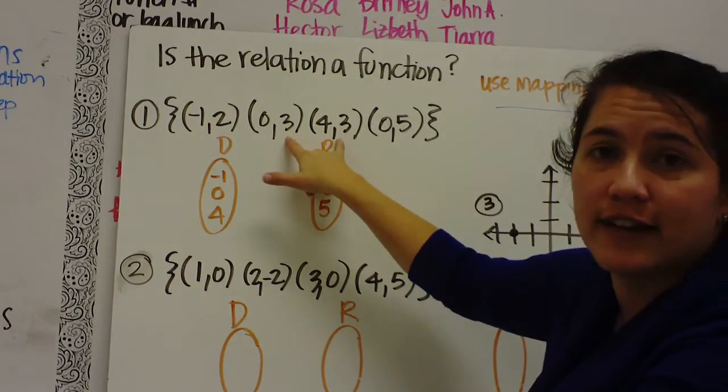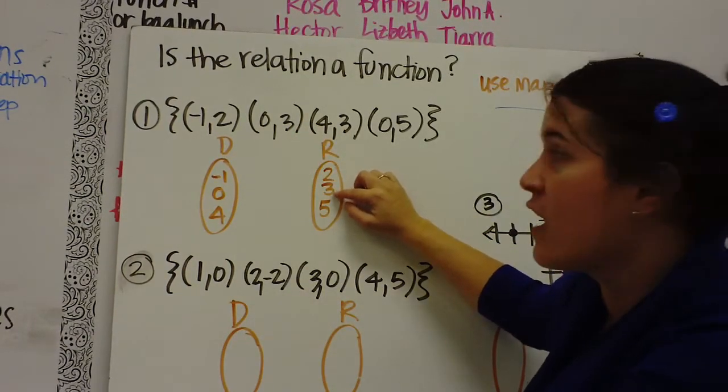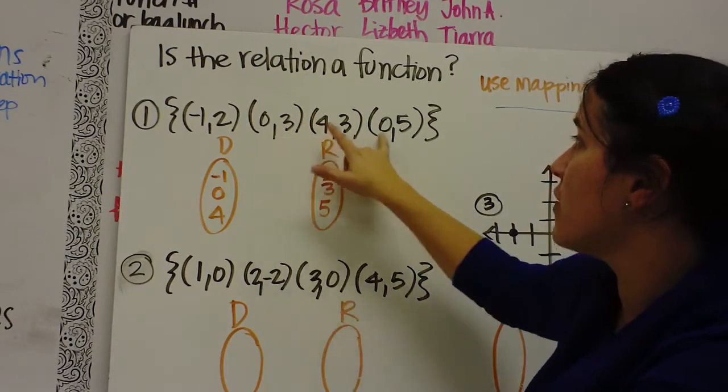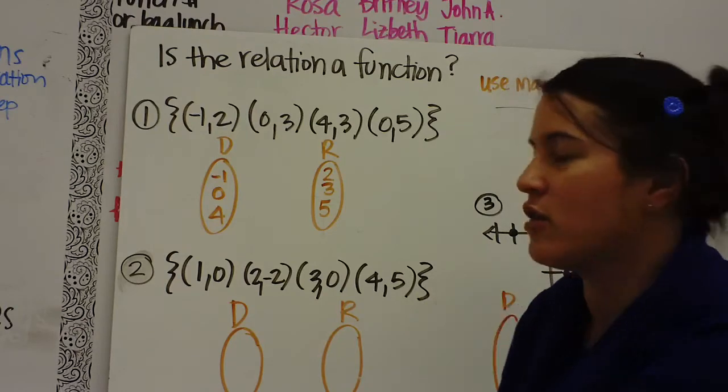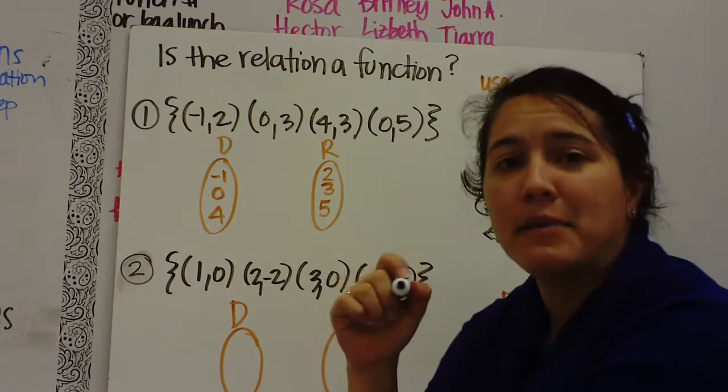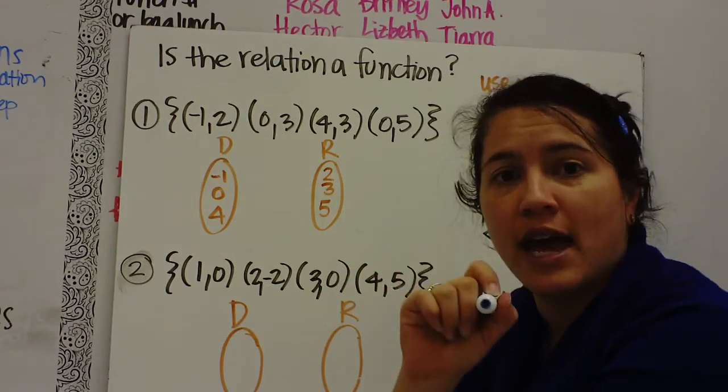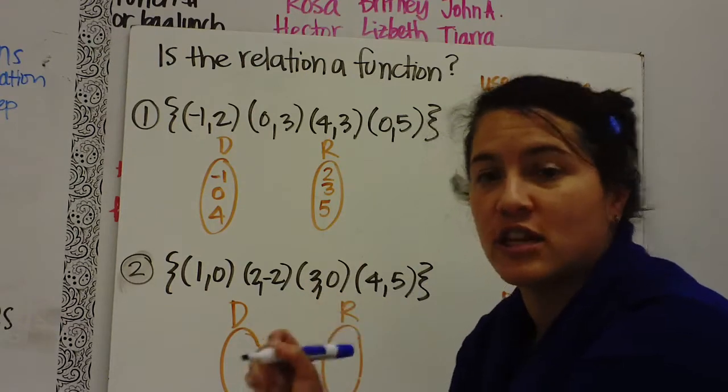You'll notice I had two 3's, so I just wrote one 3. And I had two 0's, so I just wrote one 0. You don't have to write two 0's, you just write one of each number. And now we map. What mapping means is you're going to draw an arrow from the domain to the range to see if it's paired.